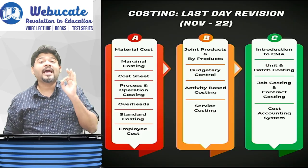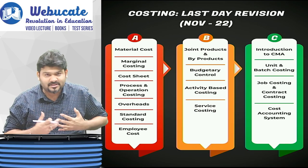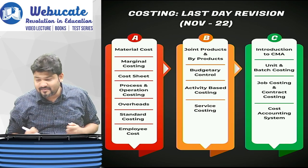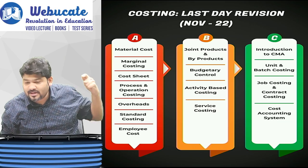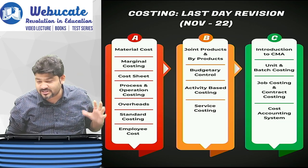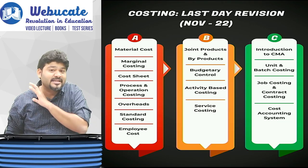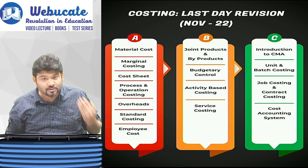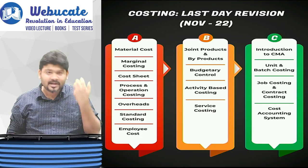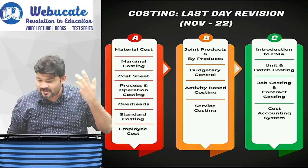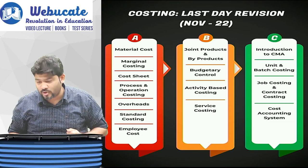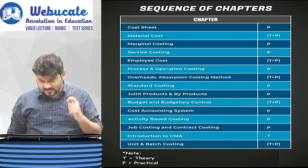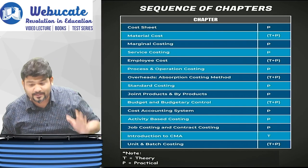The A-category chapters that are guaranteed important include: Material Cost, Marginal Cost Sheet, Process Costing, Overhead, Standard Costing, and Employee Cost. Revision videos for all of these are available on YouTube, and I will also be covering them in the live session.